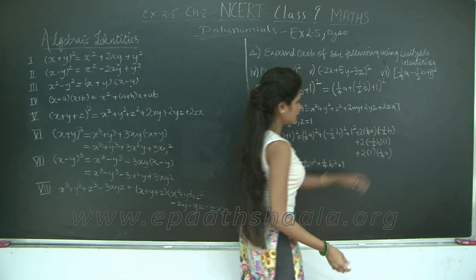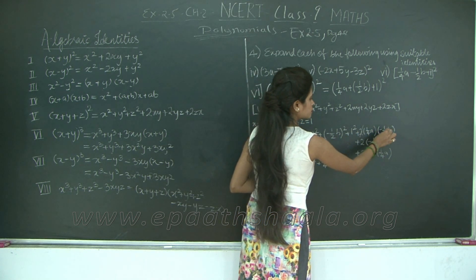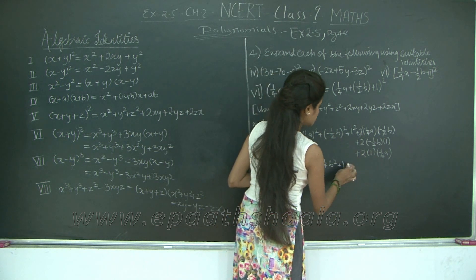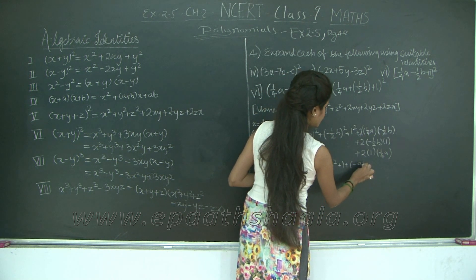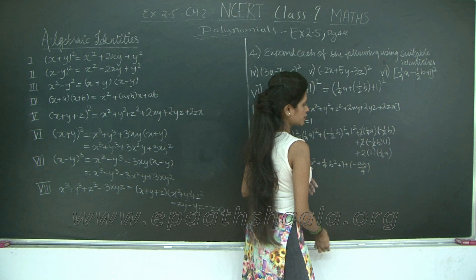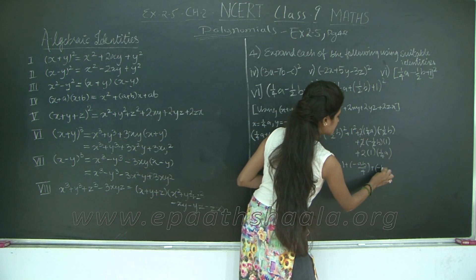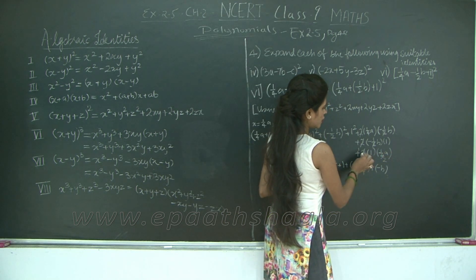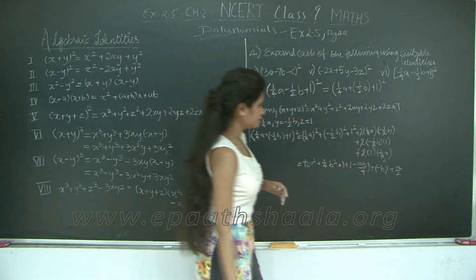For 2xy: the 2 and the denominator 2 cancel out, leaving (1/4·a) × (-b) = -ab/4. For 2yz: the 2 and the 2 in 1/2 cancel, leaving (-b) × 1 = -b. For 2zx: 2 × 1 × 1/4·a = 2/4·a = a/2.